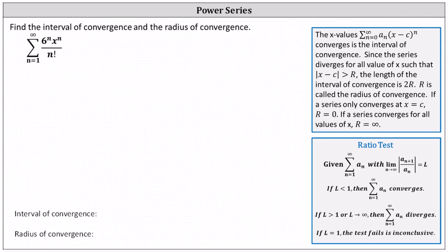Find the interval of convergence and the radius of convergence. We're given the power series: the sum from n equals 1 to infinity of the product of 6 to the power of n and x to the power of n, divided by n factorial.